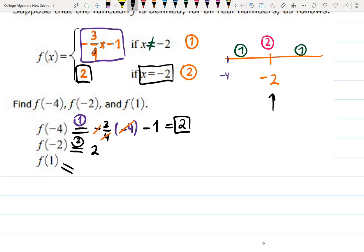What happens at 1? 1 happens somewhere over here on the right from -2, but it's still case number 1 because it's not -2. That means I'm going to substitute into -3/4x - 1. I'm going to substitute exactly 1, and the answer is -3/4 - 1. One is 4/4, so the answer is -7/4.